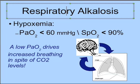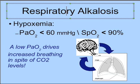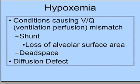The most common cause of respiratory alkalosis is hypoxemia, defined as a PaO2 less than 60 with an SpO2 less than 90%. If you remember your drive to breathe, the chemoreceptors kick in below a PO2 of 60, so low PO2 causes a drive to breathe in spite of whatever CO2 or pH may be present. In this way, hypoxemia will cause tachypnea.